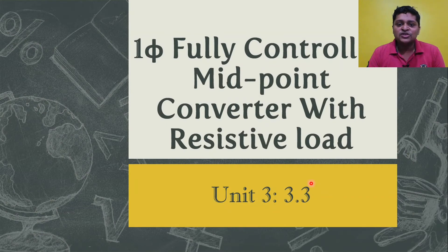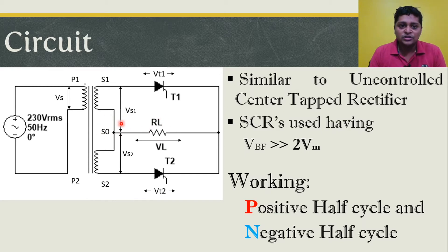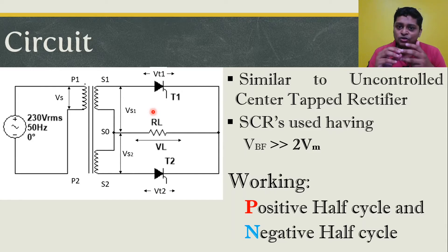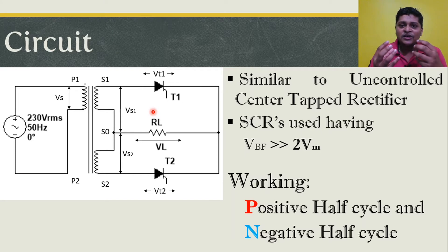Let's start with the single phase fully controlled midpoint converter with resistive load. The circuit is similar to the center tap rectifier configuration, comprising a 230V, 50Hz AC supply connected through a center tap step-down transformer to two SCRs in series with the load resistor. The load resistance is connected across the null point or midpoint. The midpoint is at zero potential — center tap rectifiers are commercially available in configurations like 5-0-5, 9-0-9, 12-0-12, where zero denotes the midpoint potential.